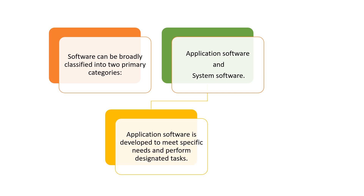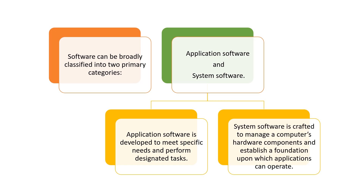Application software is developed to meet specific needs and perform designated tasks in a computer. System software is crafted to manage a computer's hardware components and establish a foundation upon which applications can operate. This is the difference between system software and application software.